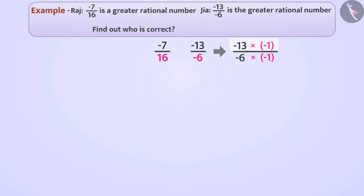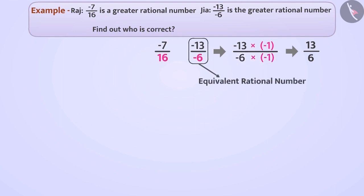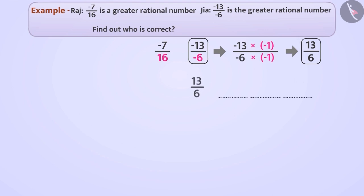By multiplying minus 13 with minus 1, we get the numerator 13. And by multiplying minus 6 by minus 1, we will get the denominator 6. In this way, we will get an equivalent rational number of minus 13 by minus 6, that is 13 by 6. This is a positive rational number.